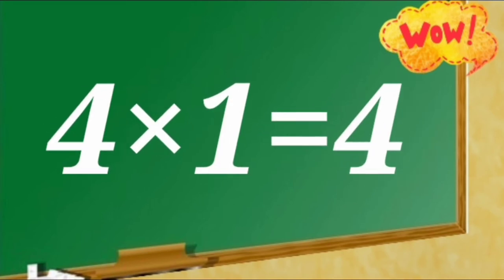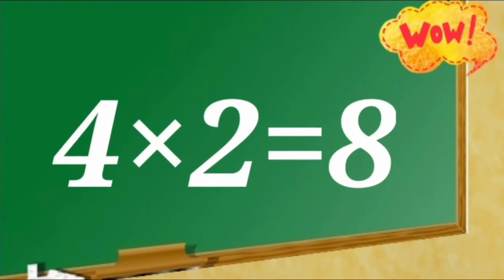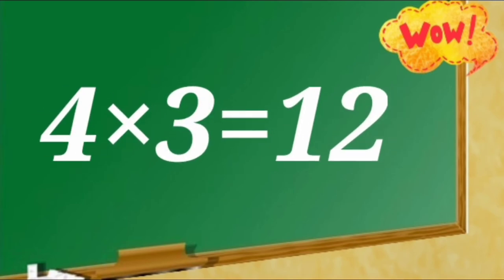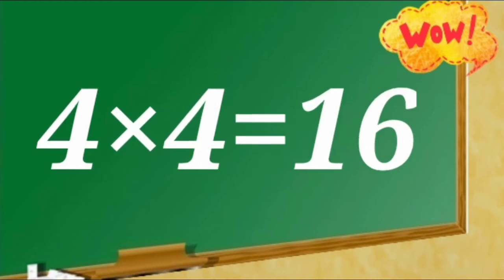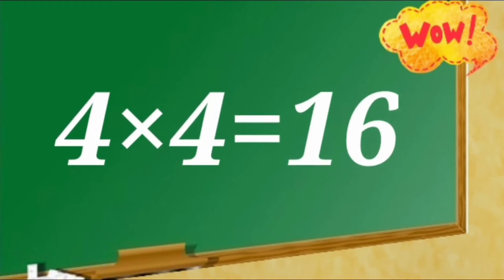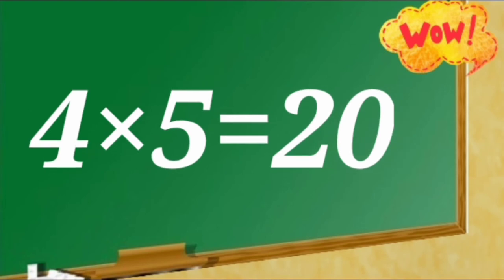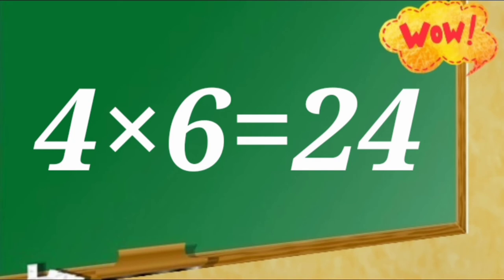Table of 4. 4 ones are 4. 4 twos are 8. 4 threes are 12. 4 fours are 16. 4 fives are 20. 4 sixes are 24.